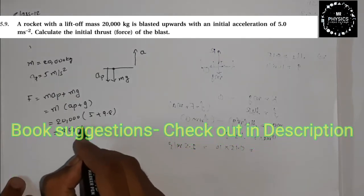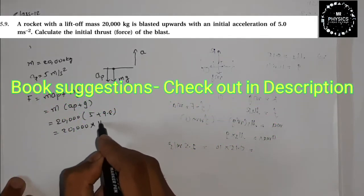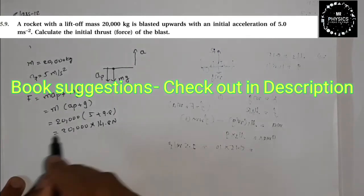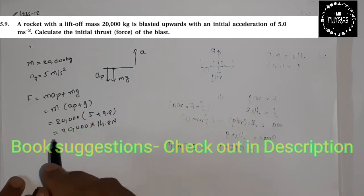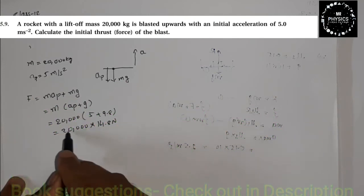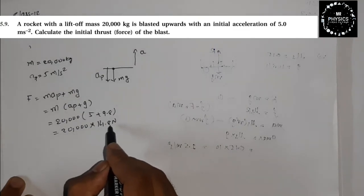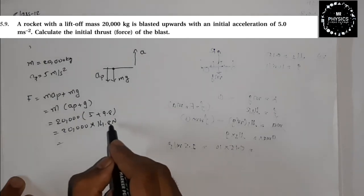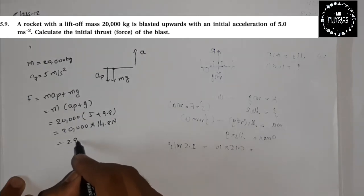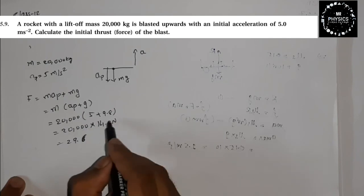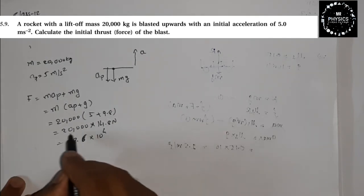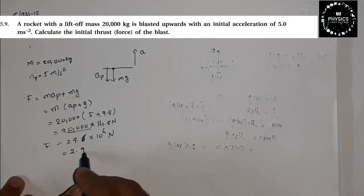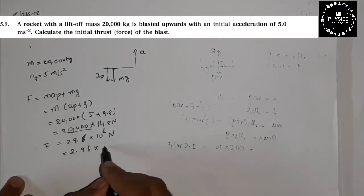Simple, you can calculate: 20,000 into 14.8 Newton. Calculate this - shift the zeros to the side, 1, 2, 3, 4, and multiply 14.8 by 2. You will get 24, 14.2, 29.6, 29.6, 18, 16, and this is 10, 24. I took 40 directly, so 2.96 times 10 to the 5.